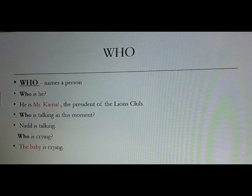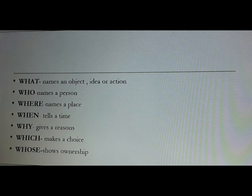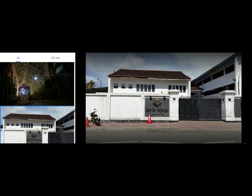Next, we use WHERE for names of a place. For example: 'Where did you go?' — 'I went to the pool in the park.' You might also ask: 'Where is my shirt? Where is my book? Where is my pencil?' WHERE tells us a location.